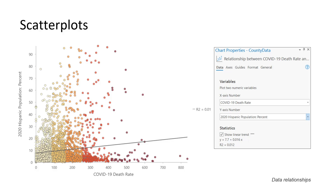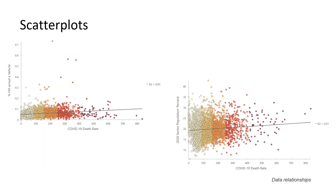Let's look at the other variables. The relationship for households without access to vehicles and even the percent senior population also have a very weak relationship to the COVID-19 death rates. Let's not give up. If we think about it, everything happens somewhere, someplace, and when we analyze our data outside of its spatial context, it might be that we're only getting one part of that story. Let's map the variables and look at the data within their spatial context.